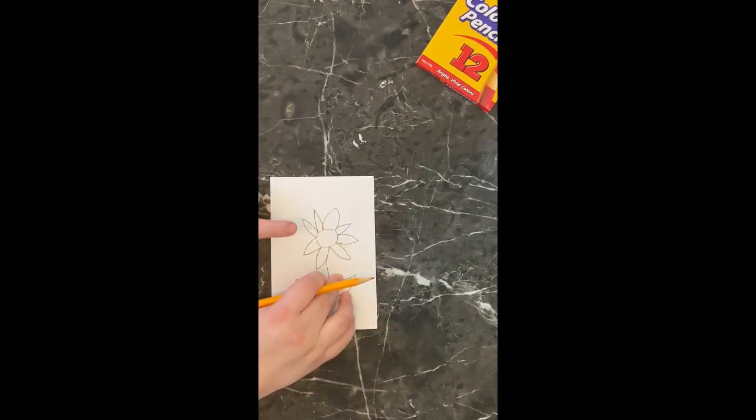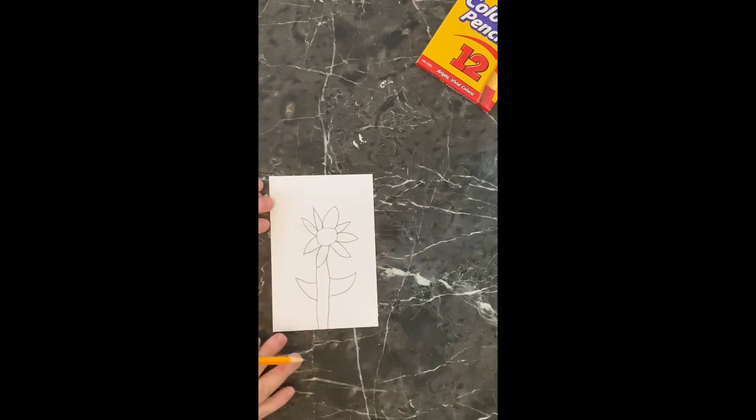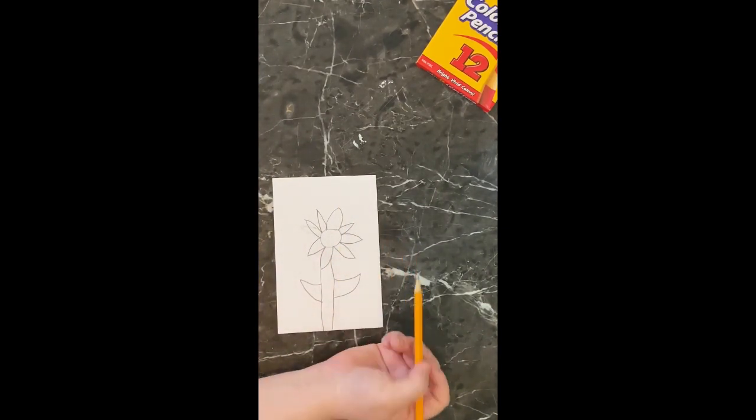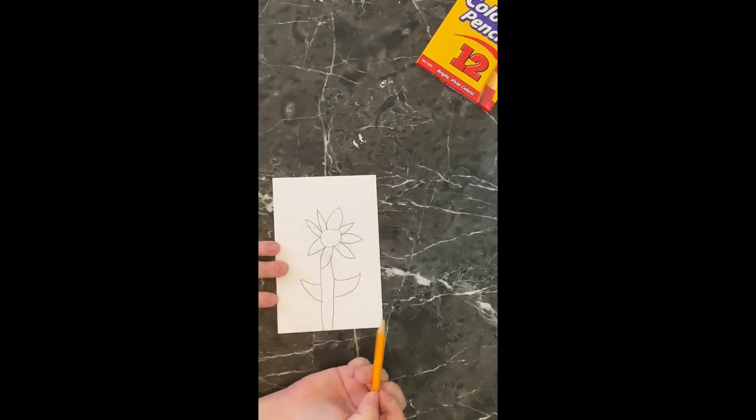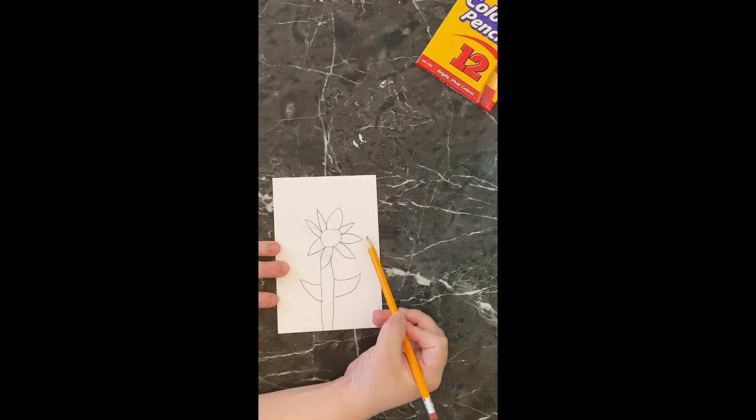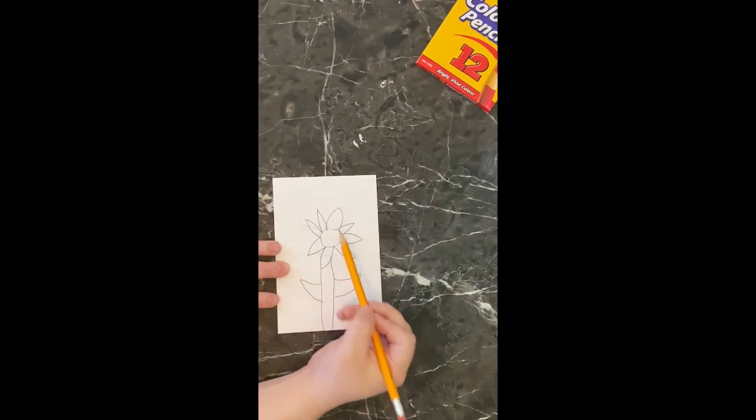Once you have done this part, this is the fun part to make the echo art. We're going to actually trace kind of trace around what we've drawn. So what I mean is you're going to make several lines that mimic what you've already drawn.